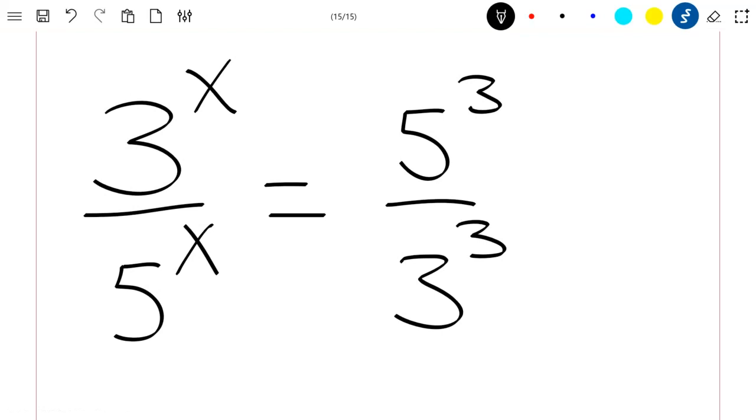The equation is 3 to the power x divided by 5 to the power x equals 5 to the power 3 divided by 3 to the power 3.